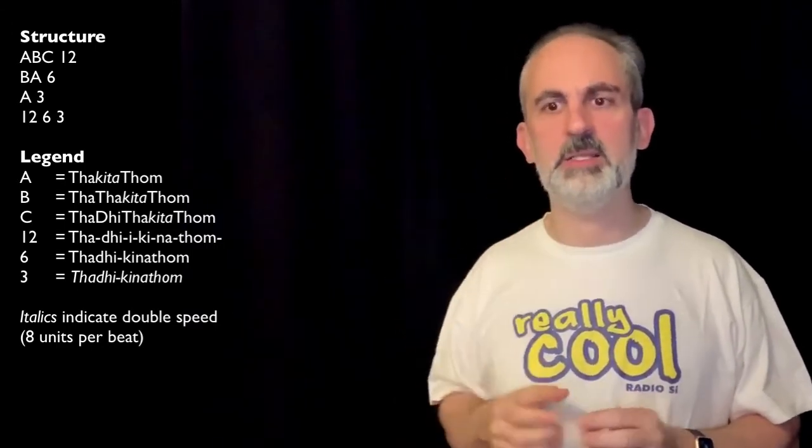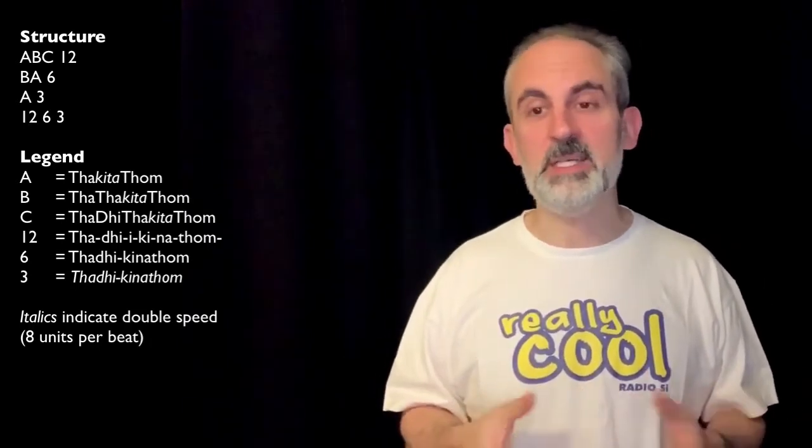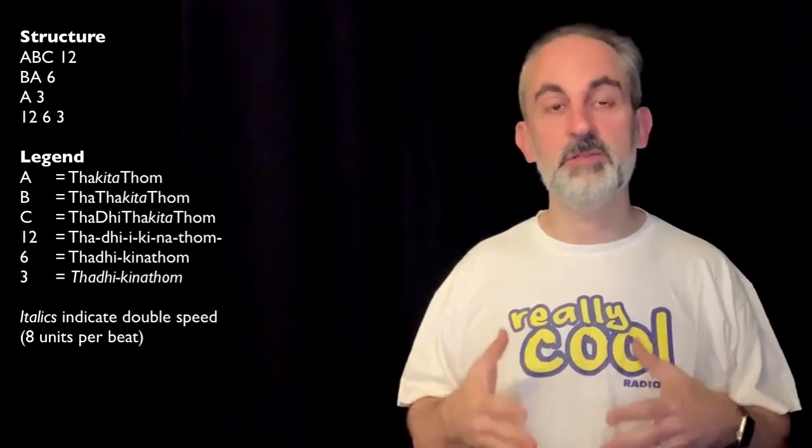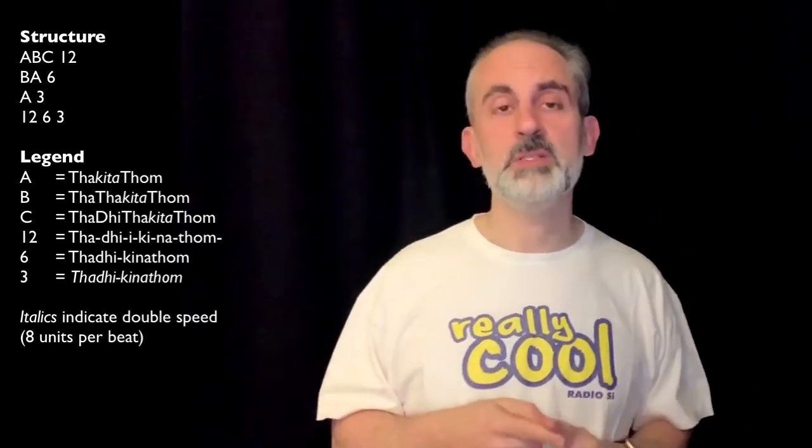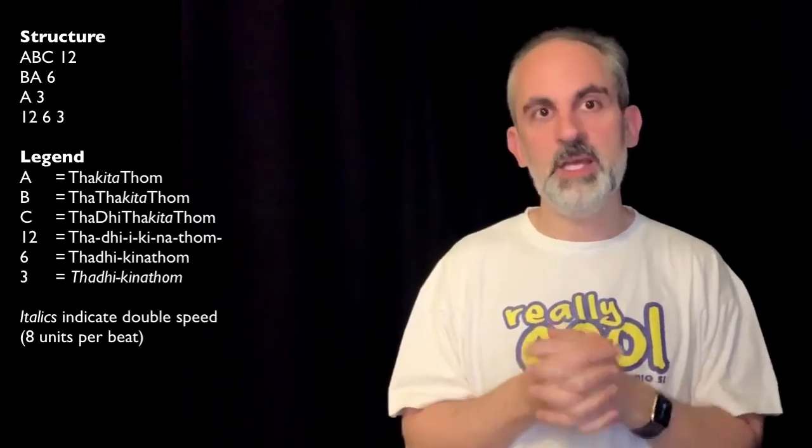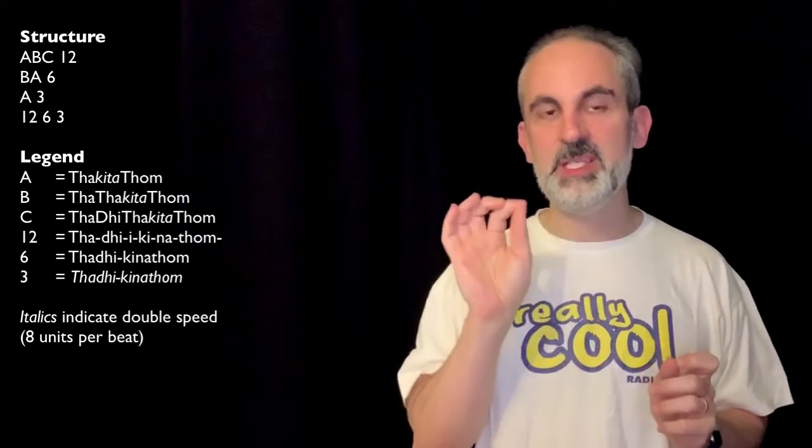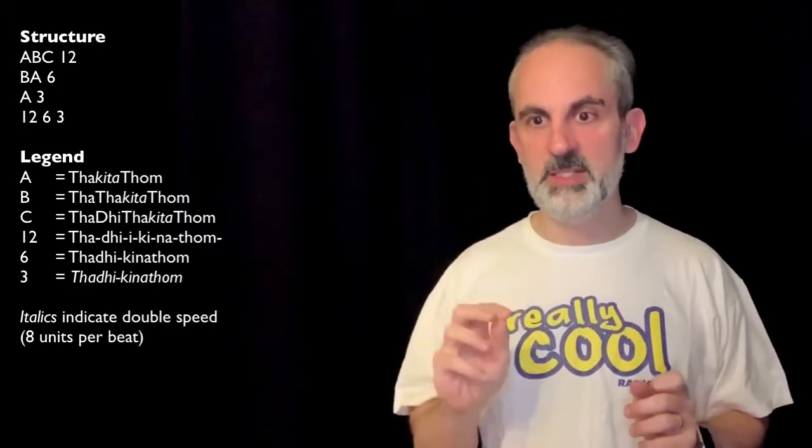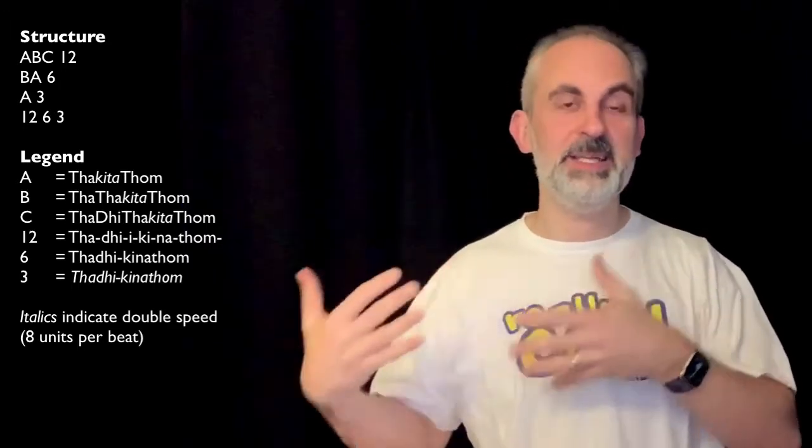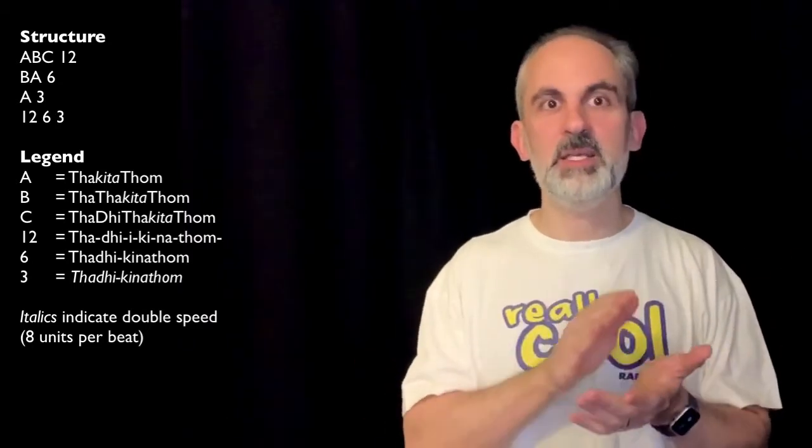And you can see that then we have the number 6. Oh, I forgot to tell you what was the 12, because I think I forgot, because it's so easy. So the number 12 is the standard phrase for 6. Remember, I told you this corvai was centered around the phrase for 6. So that 12 is T-A-D-I-K-I-N-A-T-O-M. Each syllable takes two beats. And then, yes, the number 6 at the end of the second line can only be T-A-D-I-K-I-N-A-T-O.